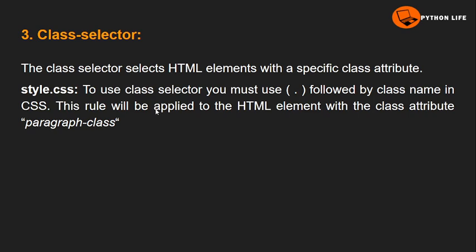To recap: for the element selector, we directly use the tag name. For the ID selector, id is equal to some name — using the id name with the hash symbol, we apply CSS. For the class selector, class is equal to some name — it is a general-purpose attribute. Using the class name with a dot symbol, we apply CSS. ID selector uses the hash symbol; class selector uses the dot symbol.